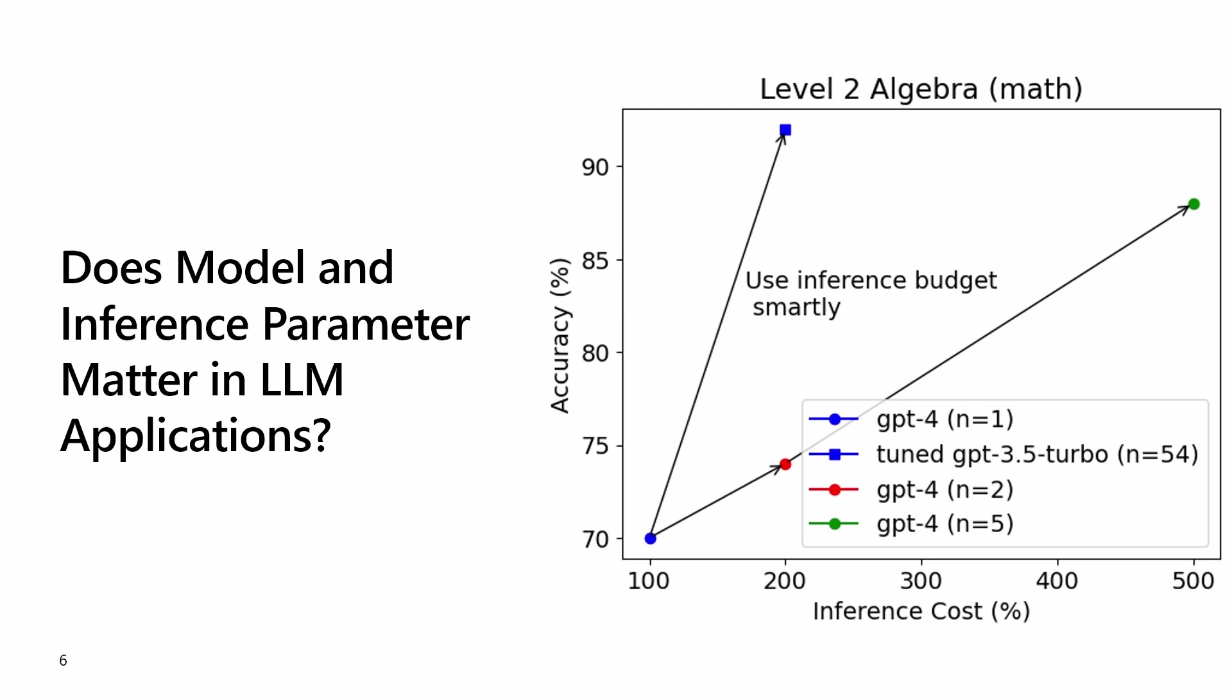In our study, we show that just by tuning the inference parameters like model, number of responses, temperature, etc., without changing any model weights or prompt, the baseline accuracy of untuned GPT-4 can be improved by 20% in high school math competition problems.